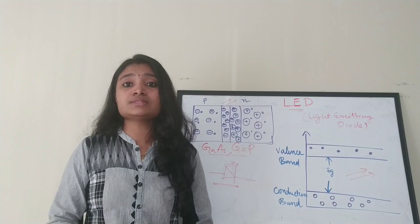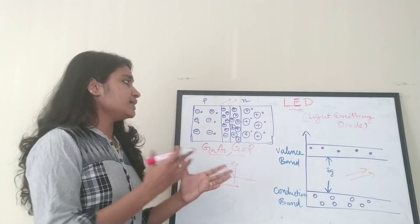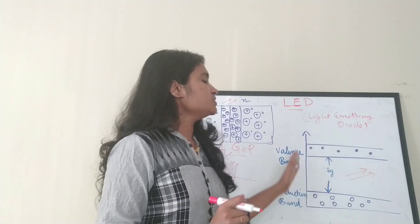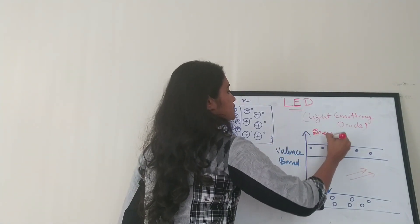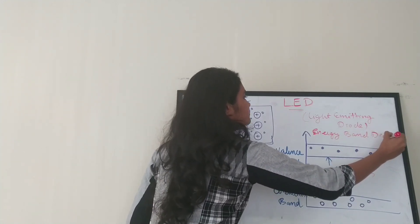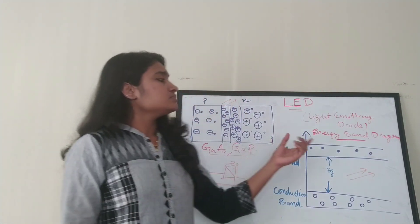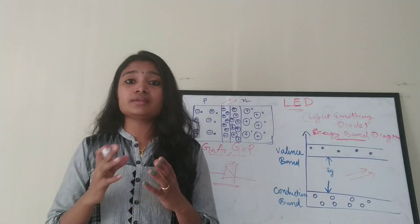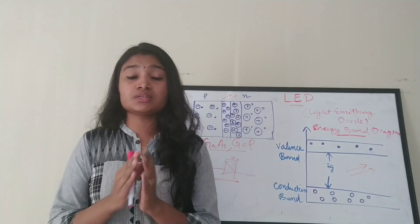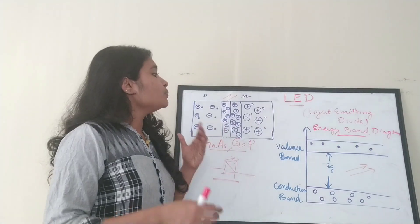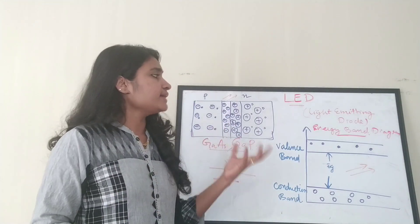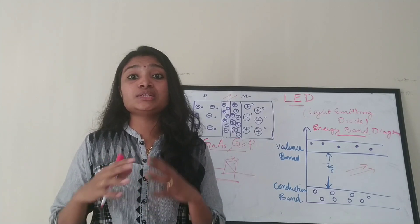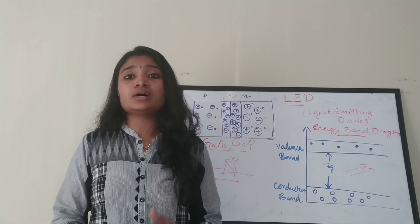Various colors of light are emitted, and this depends on the energy band gap. With variation in the energy emitted during electron-hole recombination, various LEDs emit various colors. It actually depends on the band gap between the valence band and the conduction band — due to this energy difference, the color of the light varies in various types of LEDs.